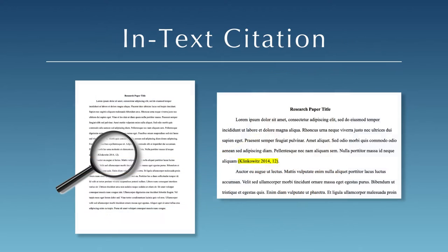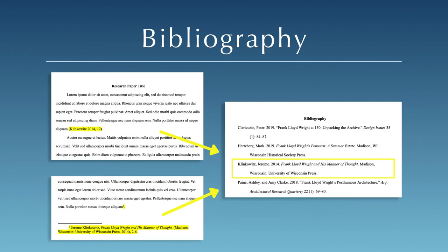There are two places where you might include citations in your paper: in-text citations, which let the reader know where you found a quote or summarized information, and the bibliography, a complete list of sources usually in alphabetical order, which may also be called references or works cited.